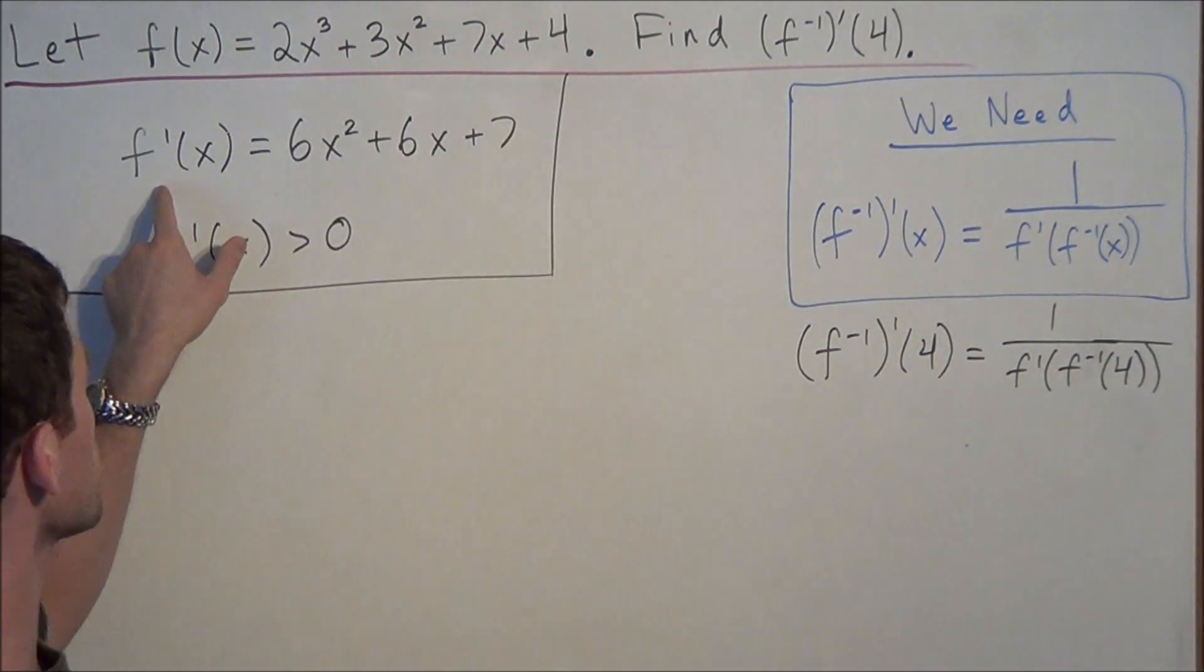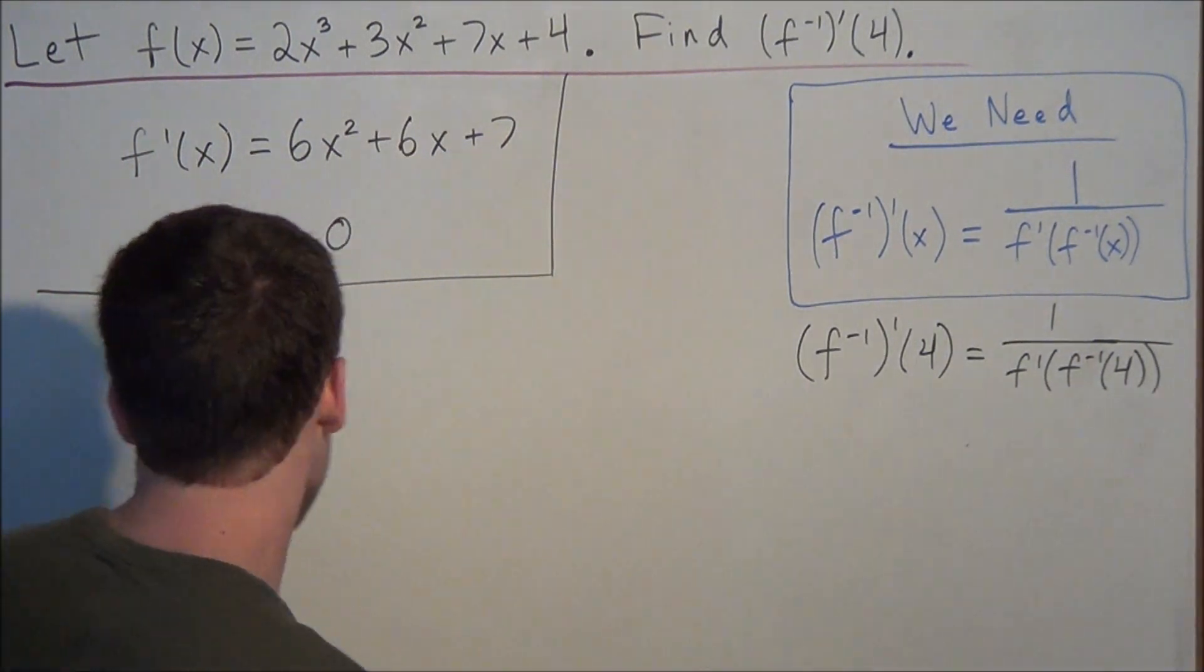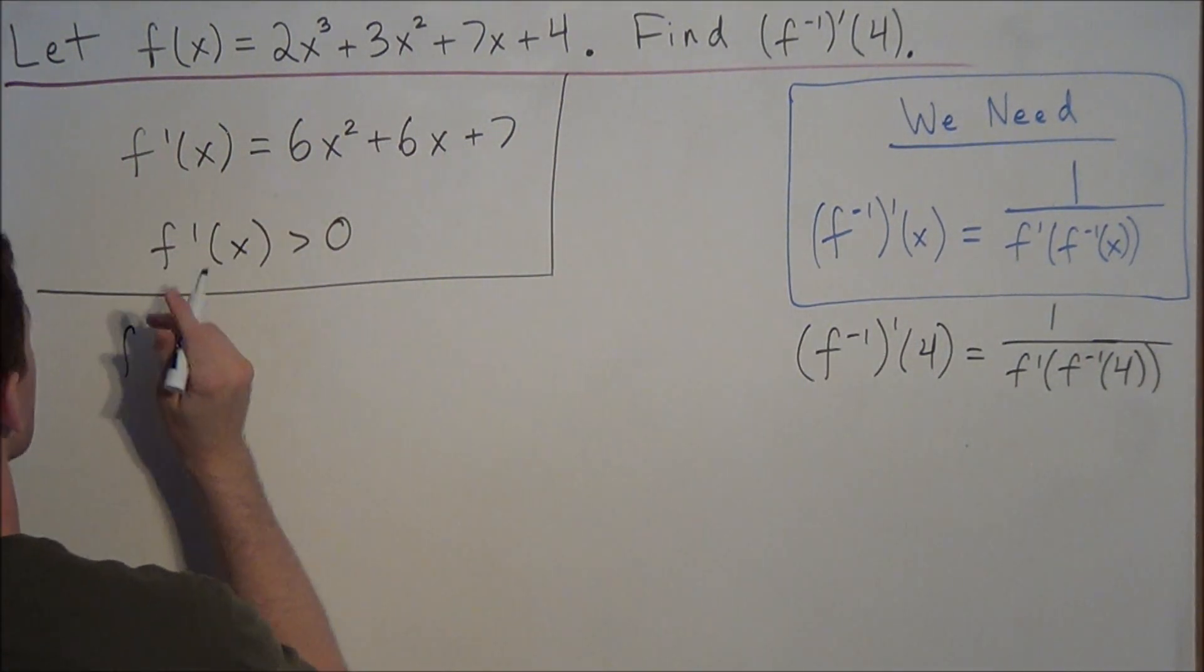So we already found the derivative. We found f prime of x, but now we need to find f inverse at 4. So this is what we want to find.